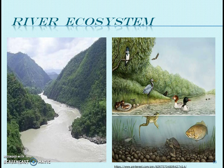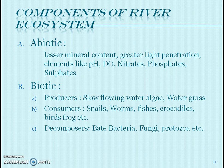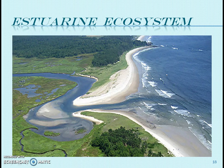River ecosystem: Rivers are large streams that flow downward from mountains. Rivers are more oxygenated due to their large surface area, which absorbs atmospheric oxygen into the water. Abiotic components include lesser mineral content, high light penetration, pH, dissolved oxygen (which is high), nitrates, phosphates, and sulfates. Biotic producers are slow-flowing water algae and water grass. Consumers include snails, worms, fish, crocodiles, birds, and frogs. Decomposers are fungi, bacteria, and protozoa.